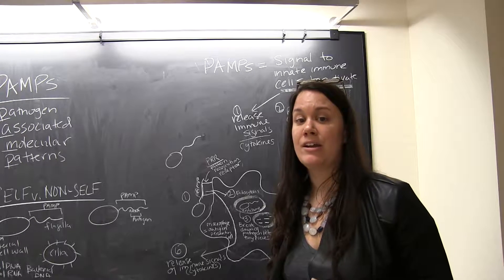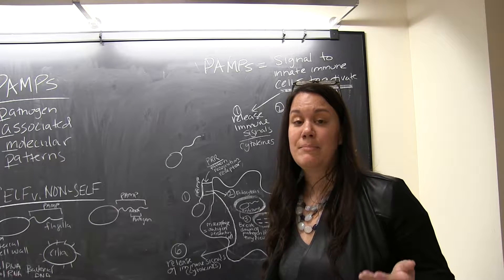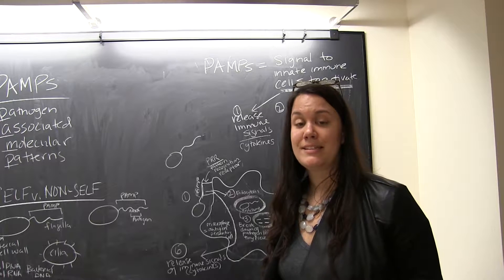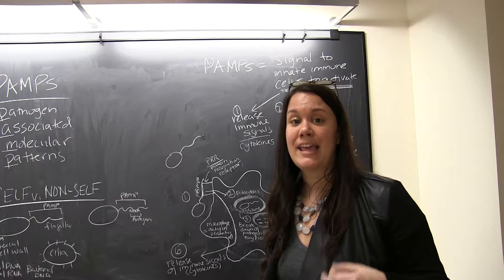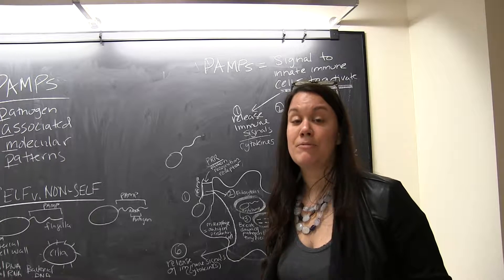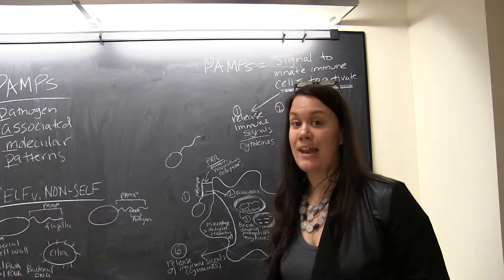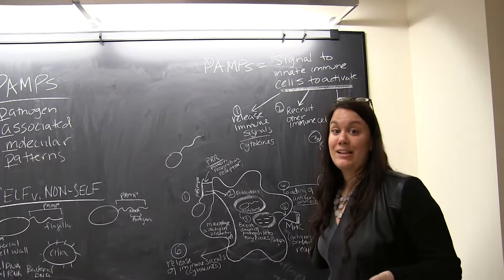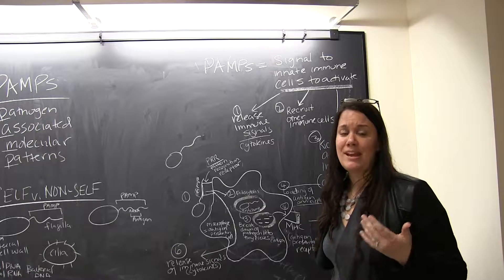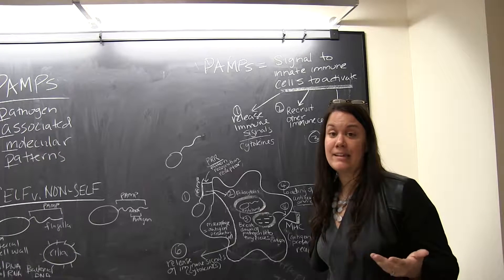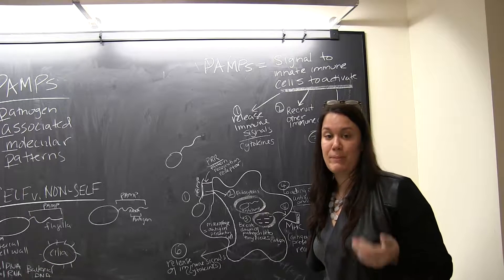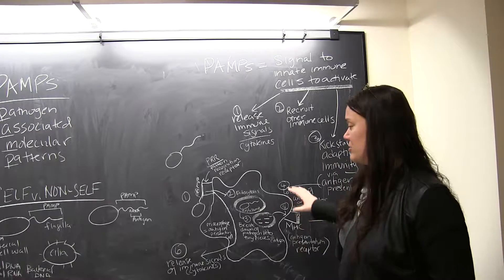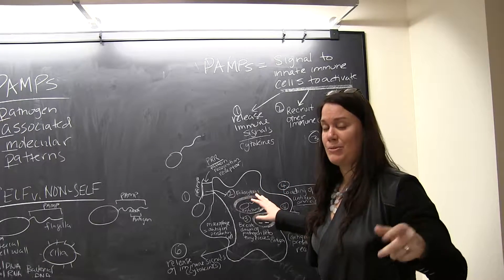Some examples of PAMPs include bacterial flagella, bacterial cilia, bacterial DNA, and also parts of viruses that are different from us — like the envelope, capsid, spike proteins, or viral DNA and RNA. In this example on the board, I'm going to talk about flagella as the PAMP, but remember we could substitute anything in here, like the spike protein for flu or for measles virus.